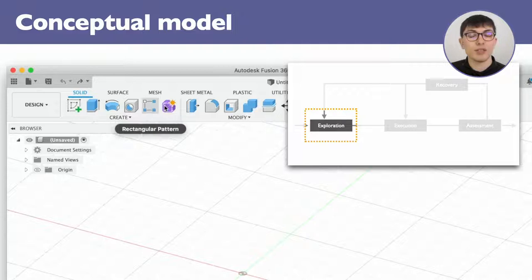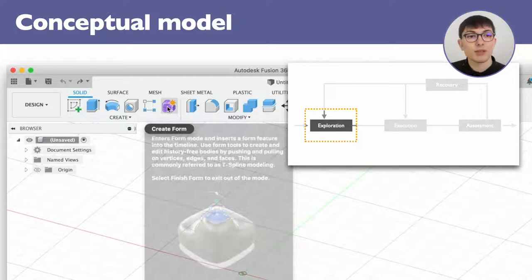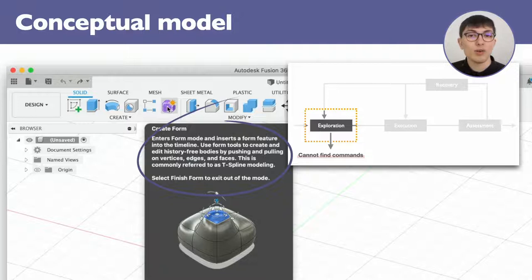users attempt to find commands that are likely to achieve the desired result. Their strategy is to review labels, icons, and sometimes tooltips. If no relevant commands are found, the episode might end here. Otherwise, we move on to the execution phase.